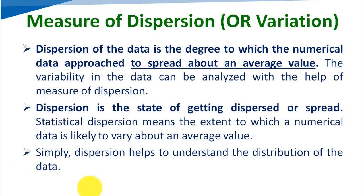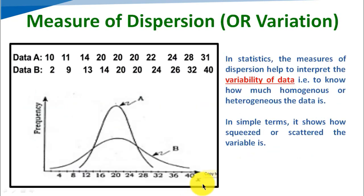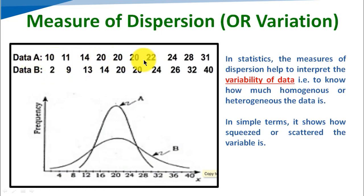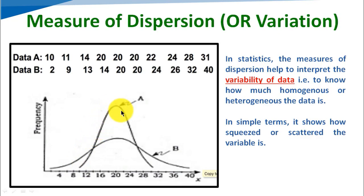We will take one example. Here, data A and data B are shown in a figure. Data A is: 10, 11, 14, 20, 20, 20, 22, 24, 28, 31. This data has been drawn on a graph — this is Figure A, which stands for data A.